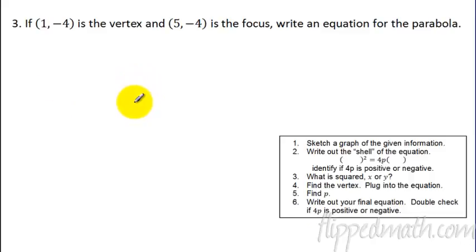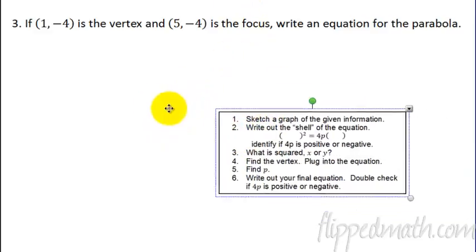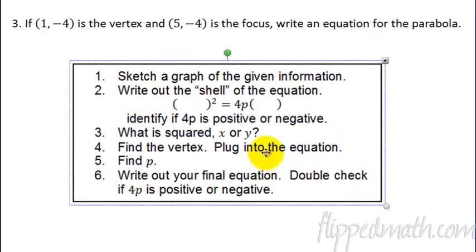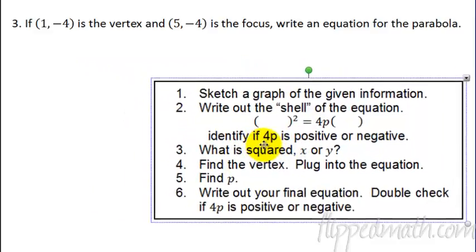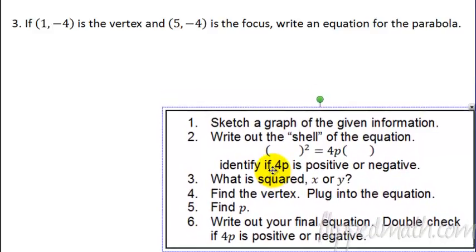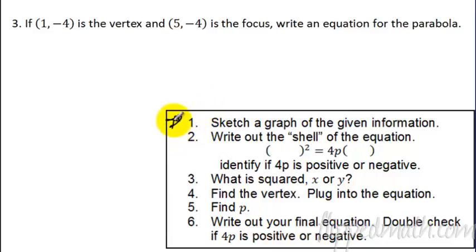On to number three and four. For these problems you will have to create the equation given some information - like maybe a vertex, a focus, maybe the directrix. You're trying to come up with the equation. I've given you a hint in your notes with some steps that will really help you get the equation you need. The first thing is sketch a graph of the given information - and you maybe even want to star that on your notes. This is something kids fail to do. Every time a kid misses it, I'll ask where's your little sketch, and they don't have it.